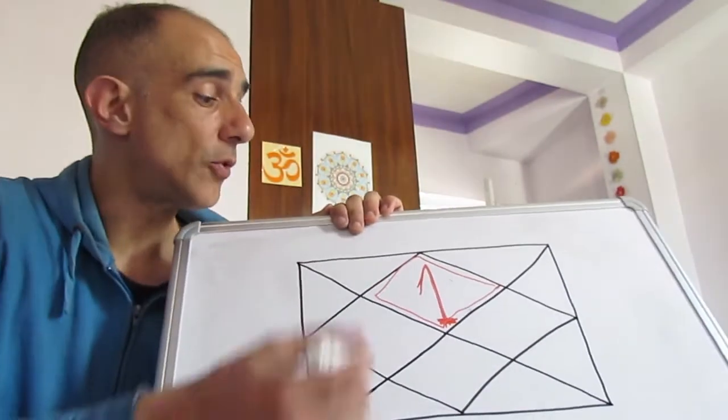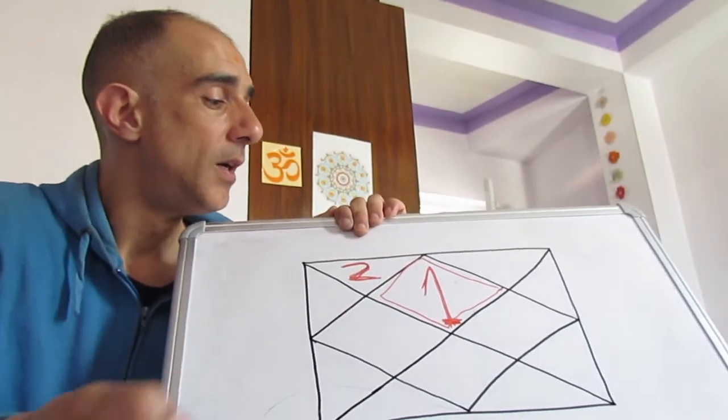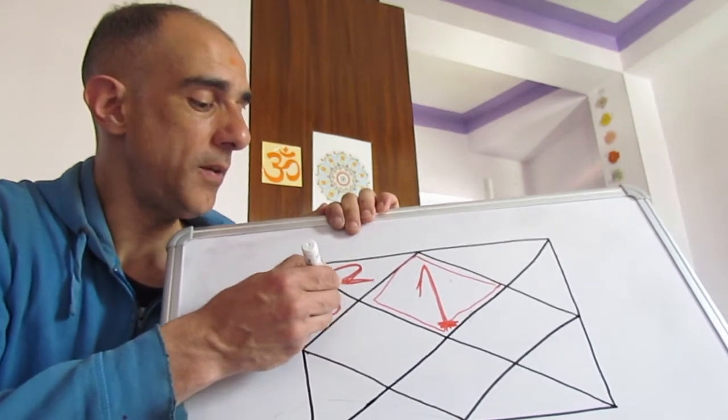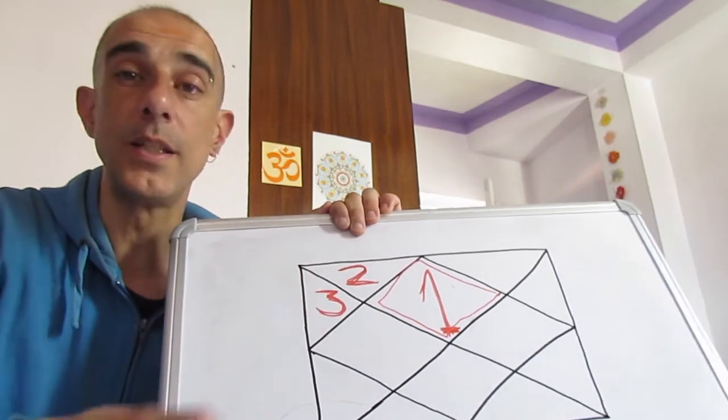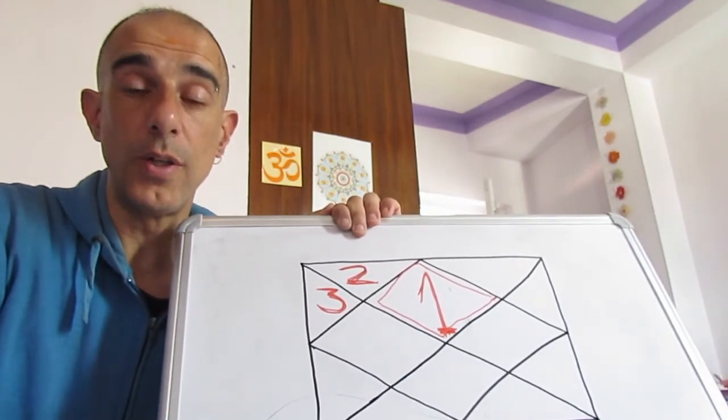Vamos a pasar a la casa dos. La casa dos está aquí. Este espacio. Este triángulo de acá es la casa número tres. Veis que el orden es, según ves la carta, en el sentido antihorario.